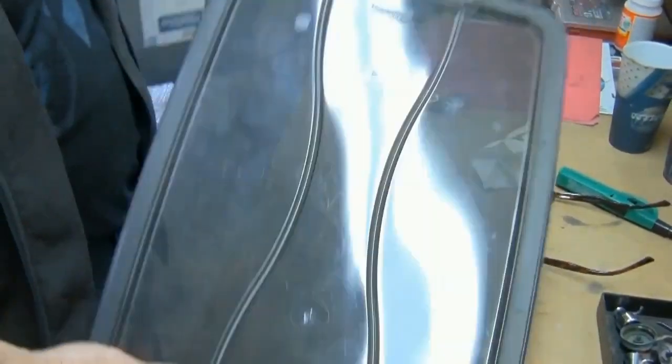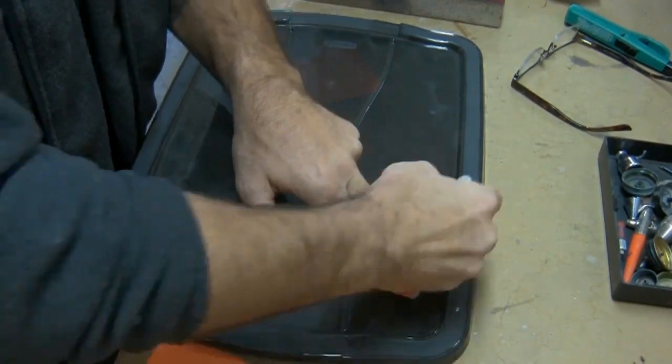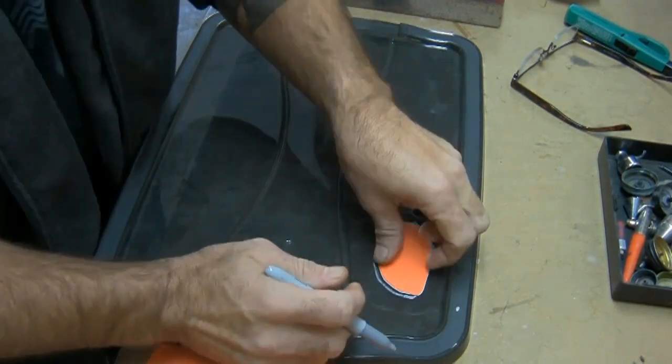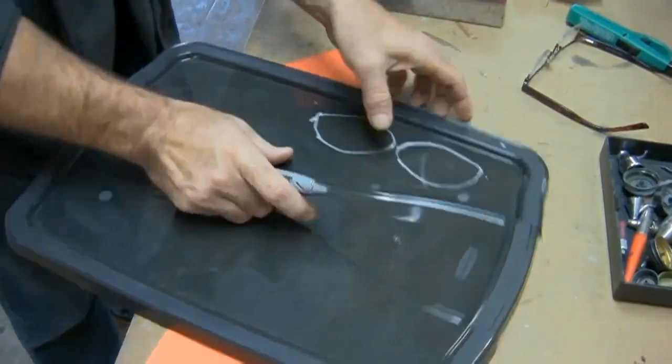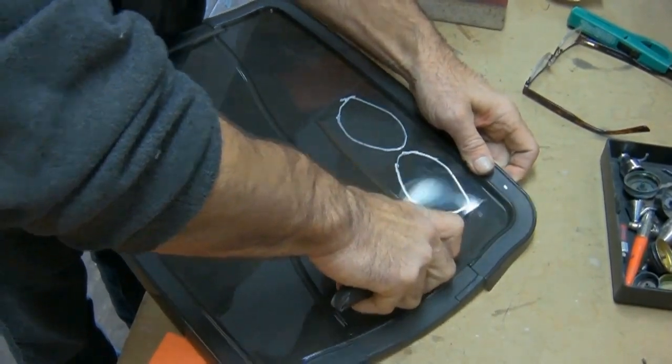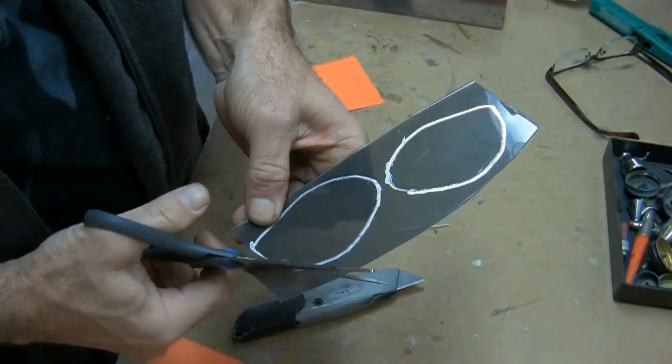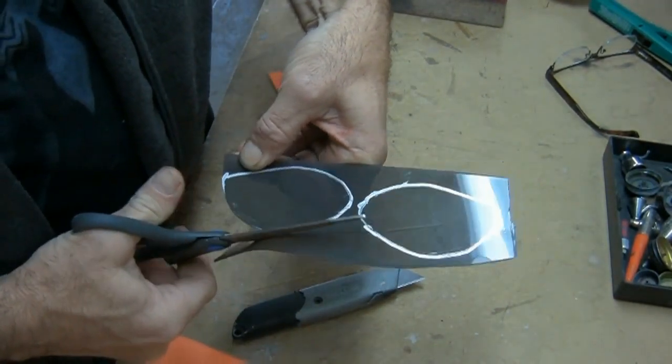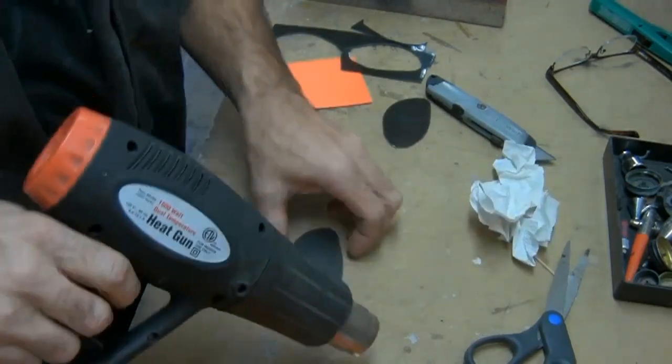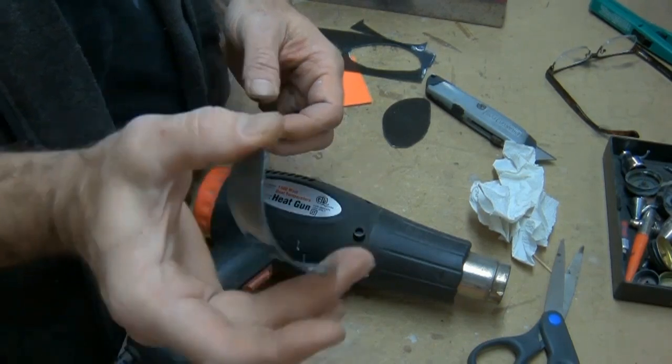For the lenses I'm using a transparent Rubbermaid tub. Go ahead and trace your templates out. The main area can be cut out using a razor. And if you have a good pair of scissors you can use it to cut out the lenses. Heat your lenses up and then slightly bowl. Hold them until they cool.